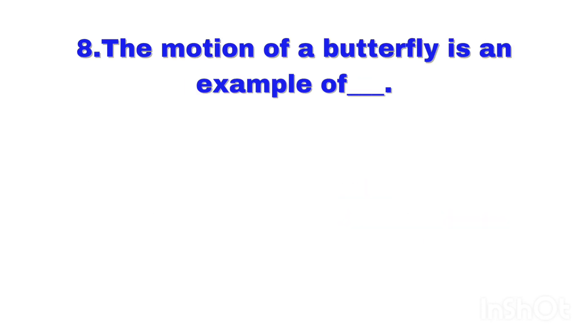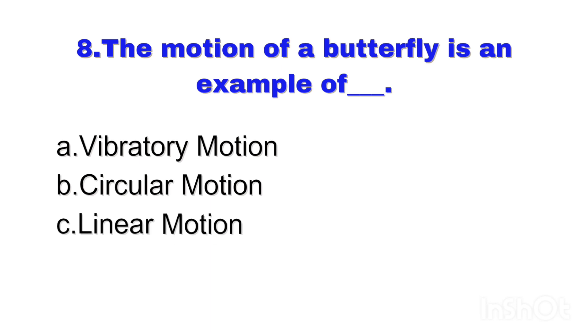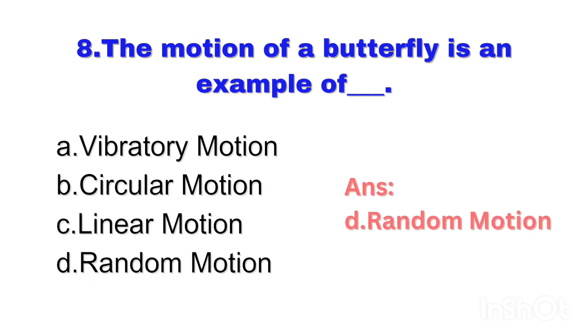Question number 8. The motion of a butterfly is an example of? Right answer: Option D — Random motion.